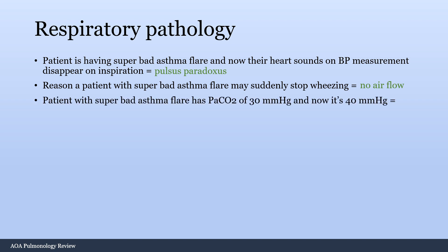A patient with a severe asthma flare whose partial pressure of CO2 is 30 — they're tachypneic and blowing off CO2. You re-evaluate 30 minutes later and it's now 40. That seems like it's going towards normal, right? No — they are having impending respiratory failure. They're getting so sick they can't blow off CO2 anymore, so the CO2 returning to normal is actually falsely elevated at this point. If you see someone's CO2 go towards normal during a severe asthma flare, be concerned they're having impending respiratory failure and need intubation.